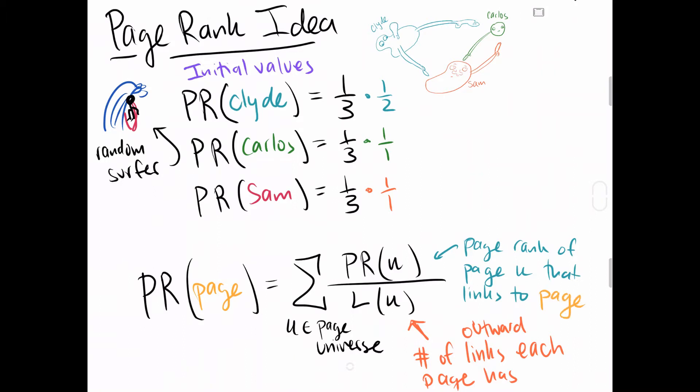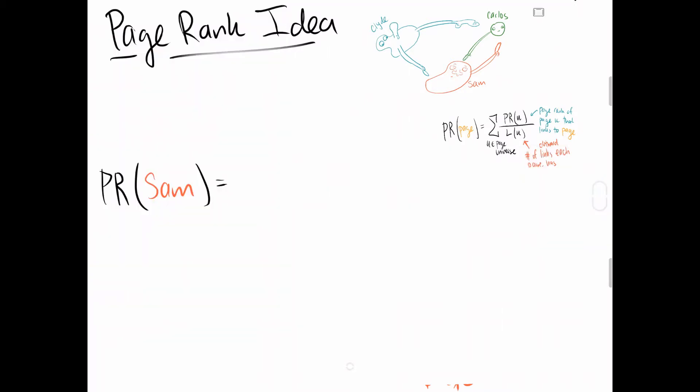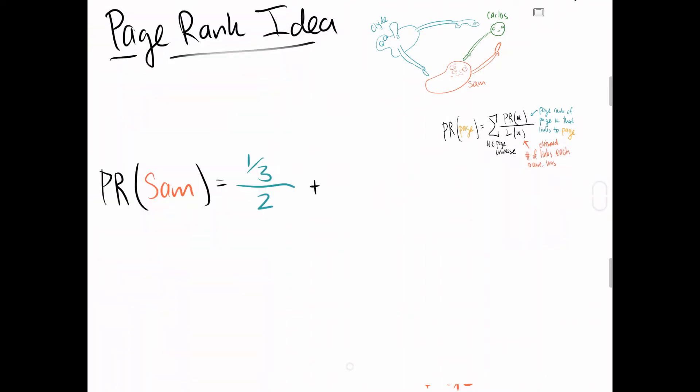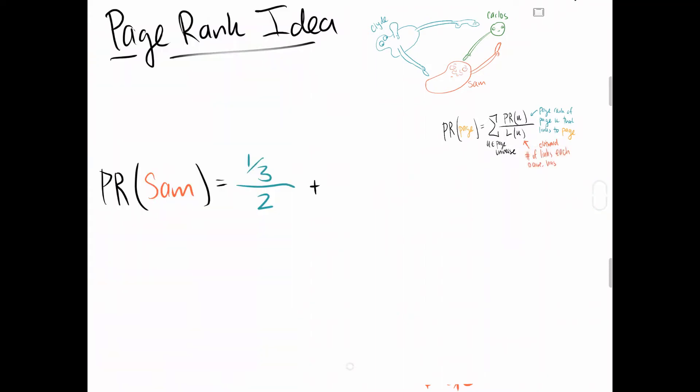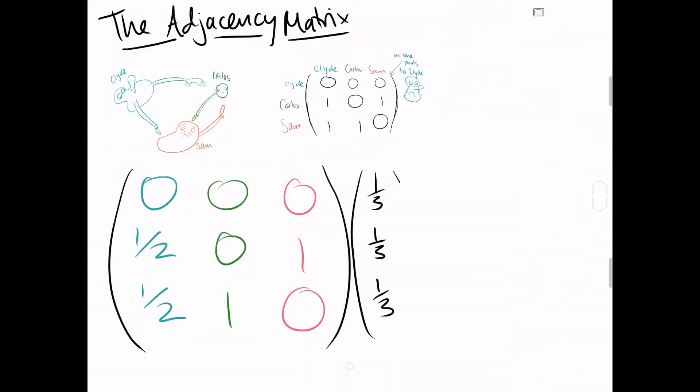So, putting all this information together, we get that the PageRank of Sam is going to be equal to one-third divided by two plus one-third divided by one, those corresponding each from Clyde and Carlos. This ends up being equal to three-sixths, or one-half, which works out if we take a look again at our adjacency matrix, where the vector is made up of the PageRanks for each blob. You can see we get three-halves, which is what we got before.